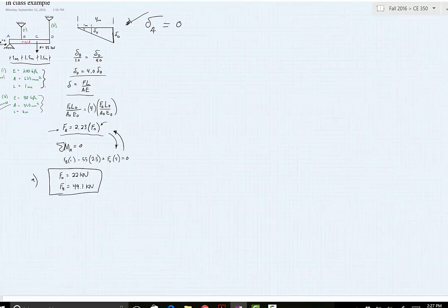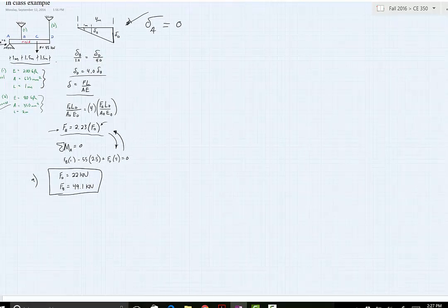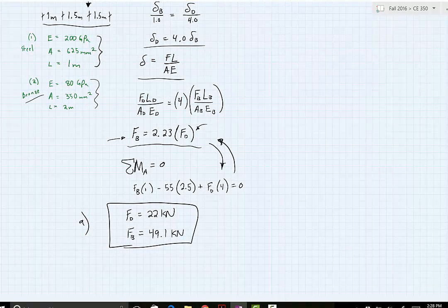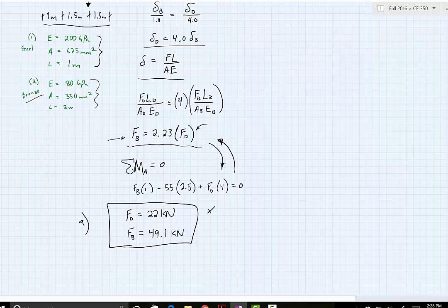But looking at the given information here that we have, for the steel cable and the bronze cable, if we look at that information we should be able to easily throw in the values that we are given with now the forces that we just solved for, to be able to solve for the deflections at B and D.